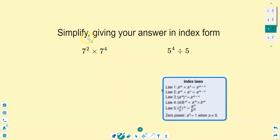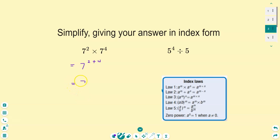Let's check out the first one. Simplify giving your answer in index form. Looking at seven to the power of two times seven to the power of four — we're multiplying indices with the same base. Think about which law that looks like. If we're multiplying, we add the indices, so that's law one. Two plus four is six, and it says leave your answer in index form. So that's done.